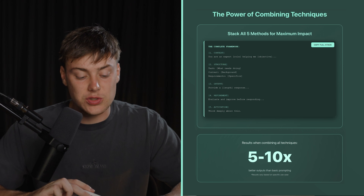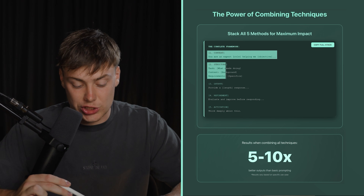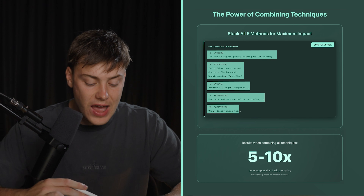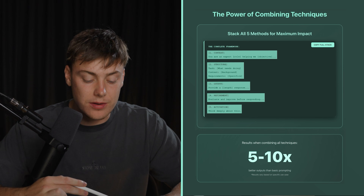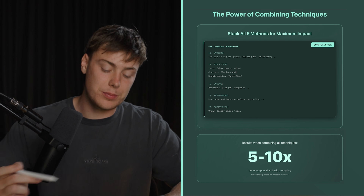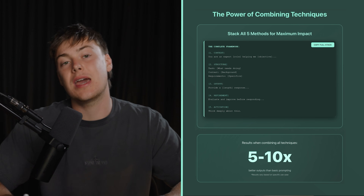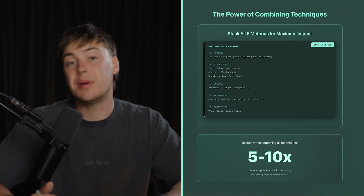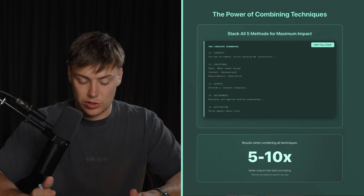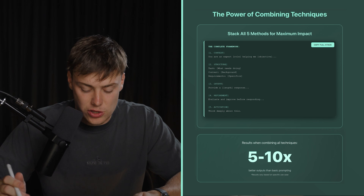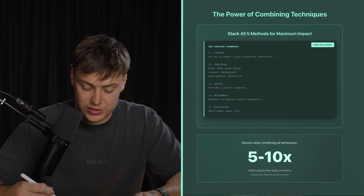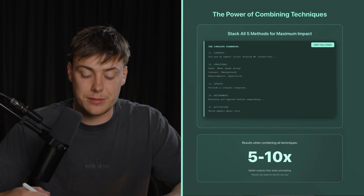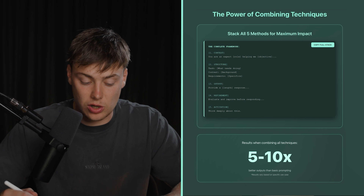The complete framework is: 1. Context, 2. Structure, 3. Output, 4. Refinement, 5. Activation. If you have a complex prompt and you use this, you're going to get an amazing answer — especially if you select the right model. Even on auto, using this framework is likely to get you a better response, and you can expect multiples on your existing prompts in terms of output.